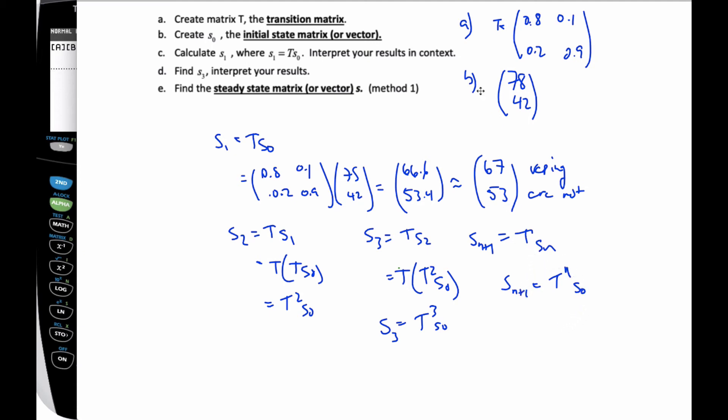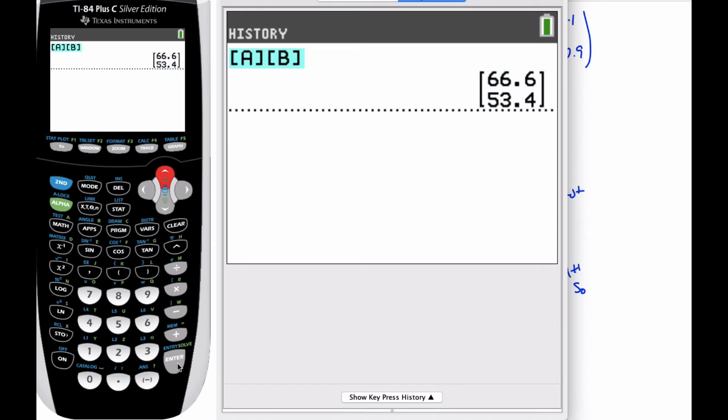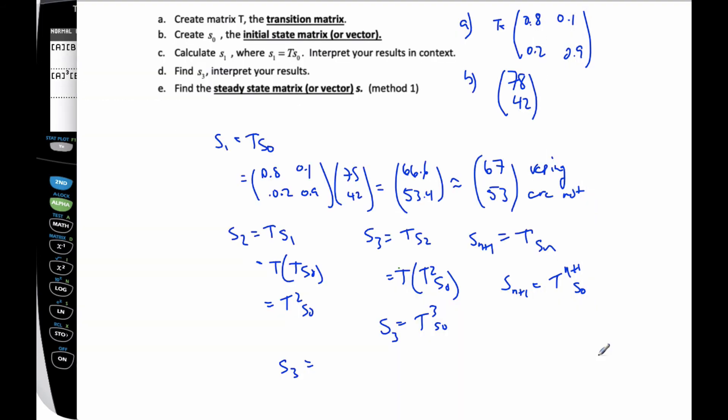S sub n is going to be T to the power n times S sub 0. Okay, and so, oh I said that wrong. S sub n is equal to T to the power n times S sub 0. Because S sub n is going to have the T and they're going to have to add them up. Okay, so if I want to find S sub 3, I'm going to take T cubed times S sub 0. And so I can just go to my calculator now. And if I go back to this matrix, I'm going to insert to the power of 3. And I can see 53 and 66.9. So approximately 53 people and 67 people. Okay, and that's S sub 3.